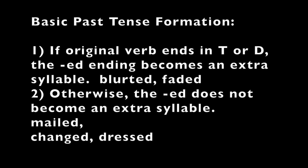Before we start linking, let's look at the basic past tense formation rules. If the original verb ends in a T or D, the ED ending becomes an extra syllable, like 'blurted.' Blurted has two syllables. 'Faded' — faded has two syllables.